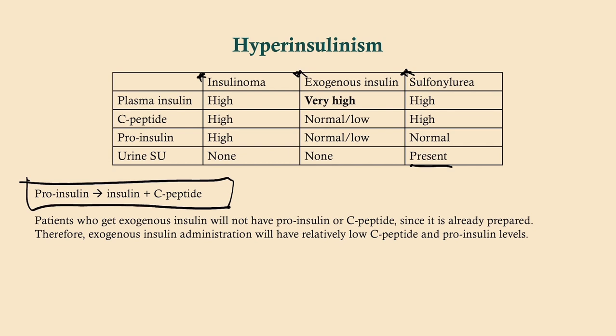With an insulinoma, you can piece this together: you'll have high plasma insulin and high C-peptide because it's your own insulin being made by the tumor. You'll have high pro-insulin and no sulfonylureas in the urine. These three scenarios are commonly tested, and it's worth understanding the biochemistry rather than just memorizing the chart cold.